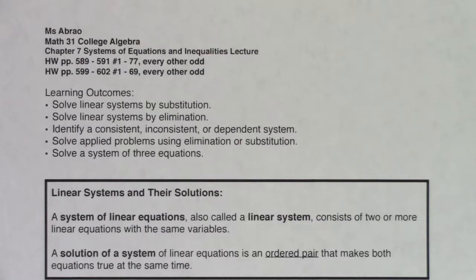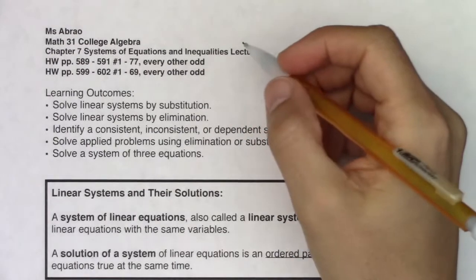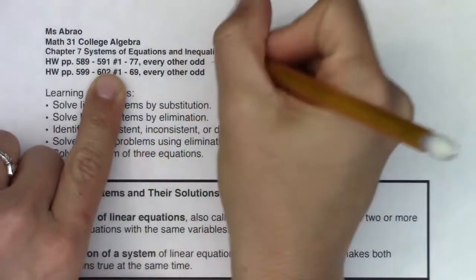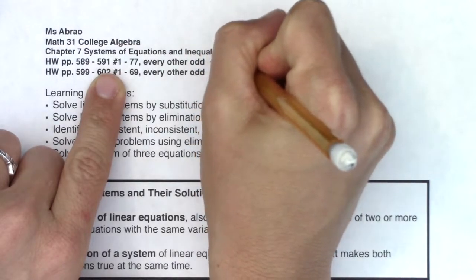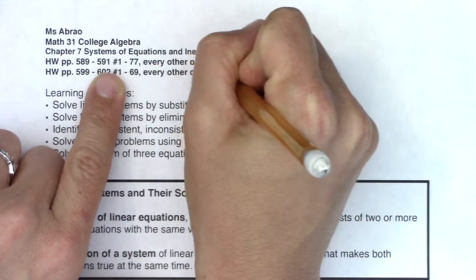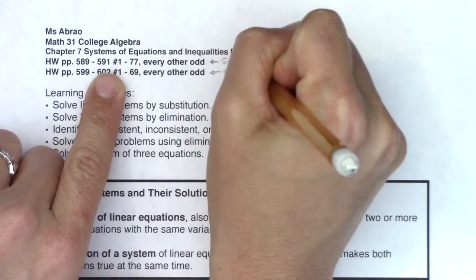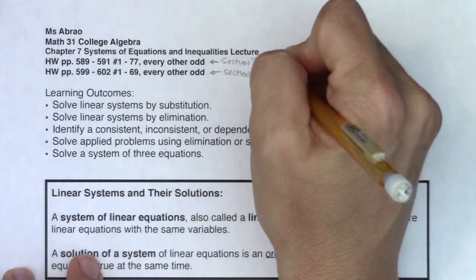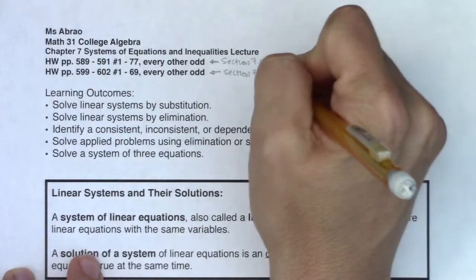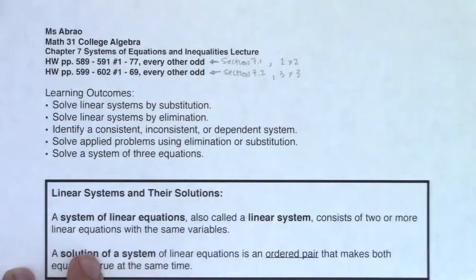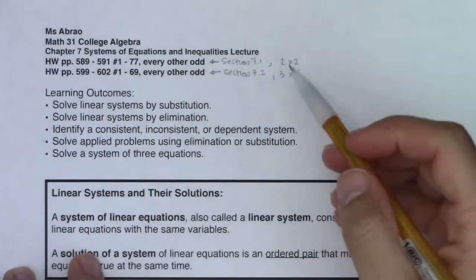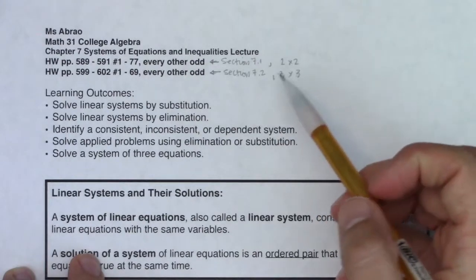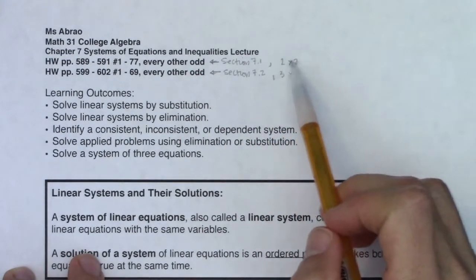Welcome to your chapter 7 packet. I've combined two sections into one packet. The homework dealing with section 7.1 and section 7.2 both involve systems of equations. I'll refer to problems in section 7.1 as two by twos and the systems in section 7.2 as three by threes. At some point in your math careers, you've solved systems that are of the two by two nature.